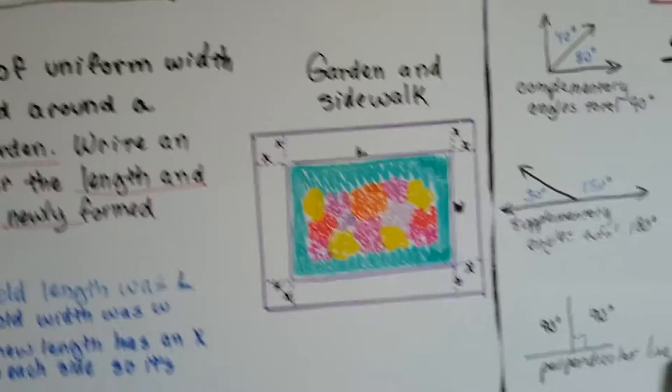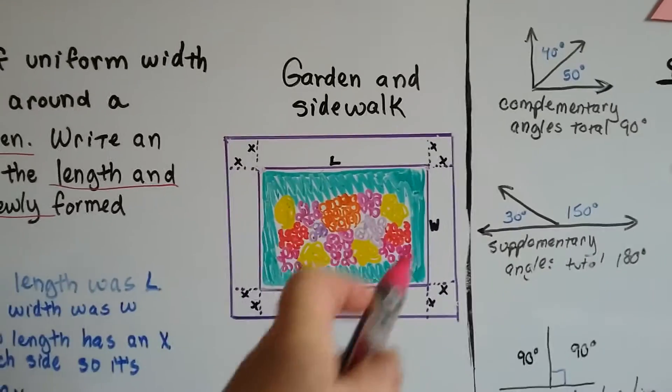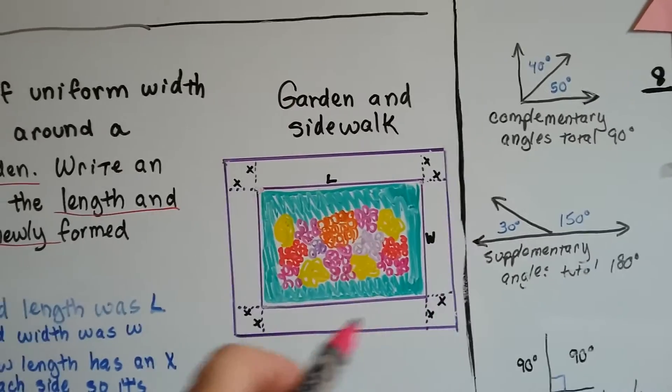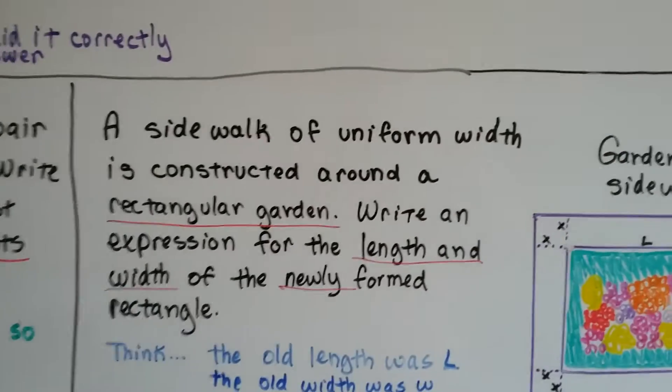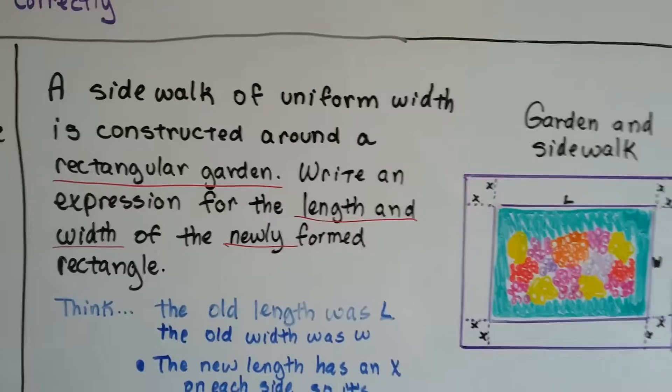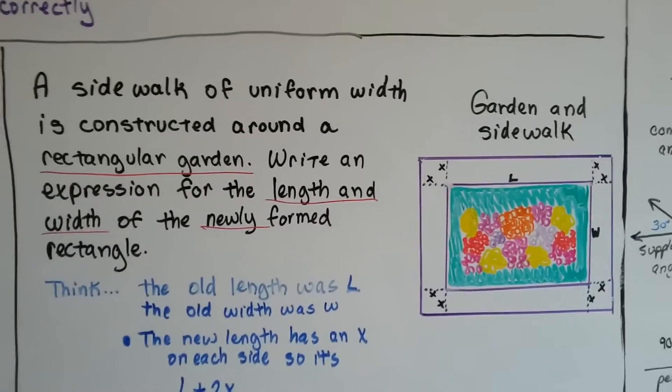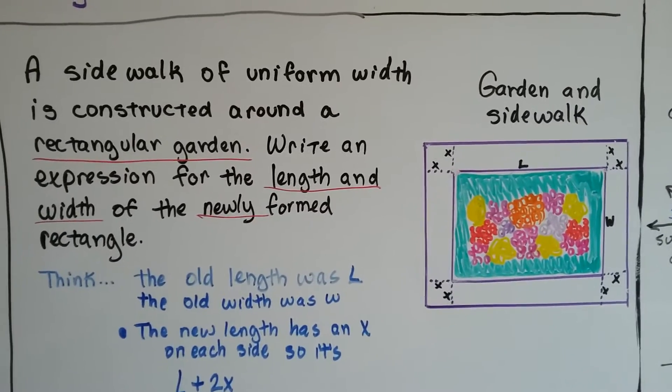Look at this beautiful garden we've got here. See the green grass around the flowers? So it's a garden, and then they put a brand new sidewalk around it. So a sidewalk of uniform width is constructed around a rectangular garden. Write an expression for the length and width of the newly formed rectangle.